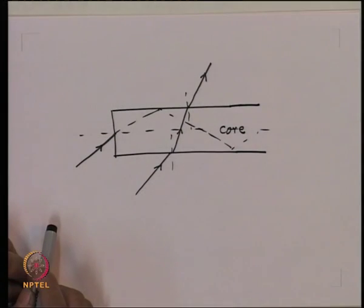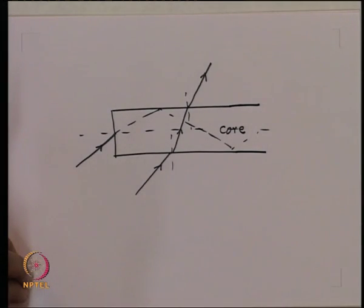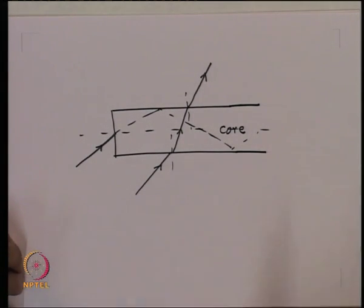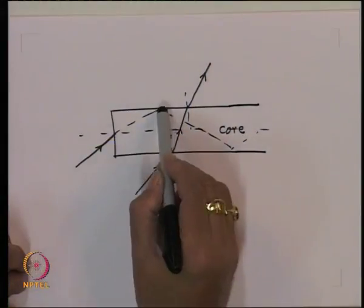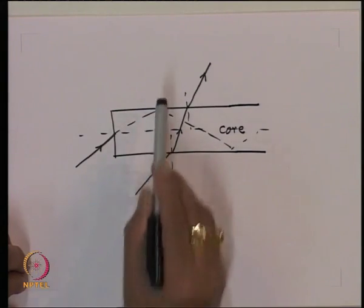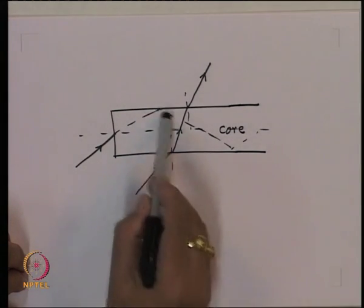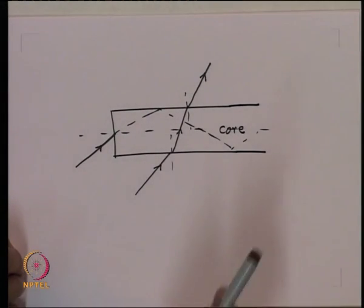Even the smallest possible leakage of light due to partial reflection would take away most of the power within a very short distance. Therefore, the light must be launched inside the core such that it is totally internally reflected at the core-cladding boundary, and through multiple total internal reflections, the light is guided along the core.